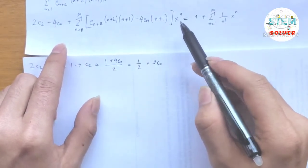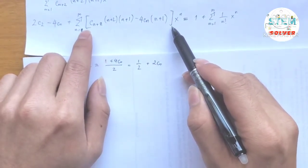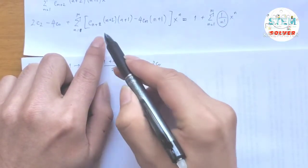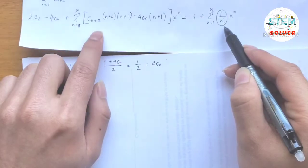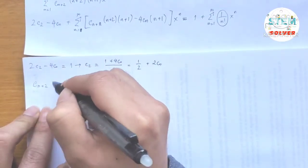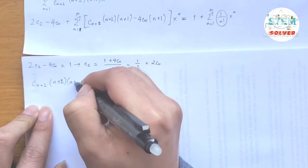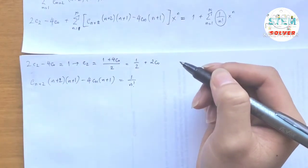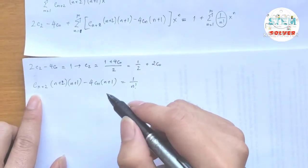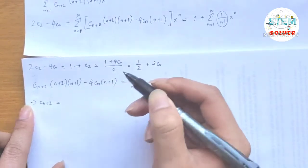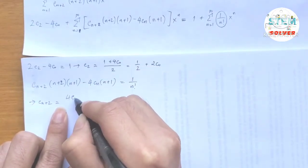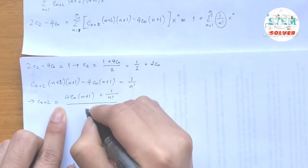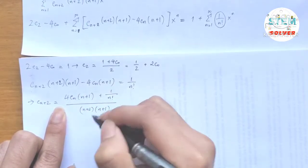For the x to the n terms, everything inside the bracket on the left equals 1 over n factorial on the right. So: c_{n+2} · (n+2) · (n+1) minus 4 c_n · (n+1) equals 1 over n factorial. Solving for the highest subscript c_{n+2}: c_{n+2} equals [4 c_n · (n+1) plus 1 over n factorial] all divided by (n+2)(n+1).